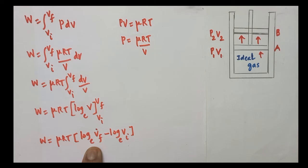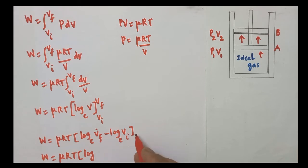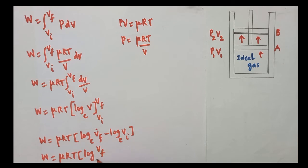Applying the logarithm rule, the expression becomes W = μRT log base e (VF / VI). This is the final expression for work done in an isothermal process.